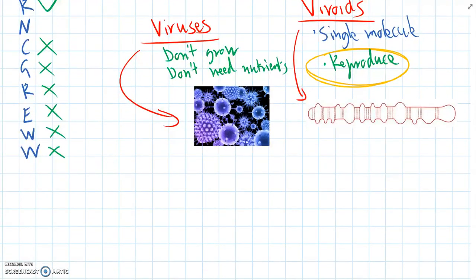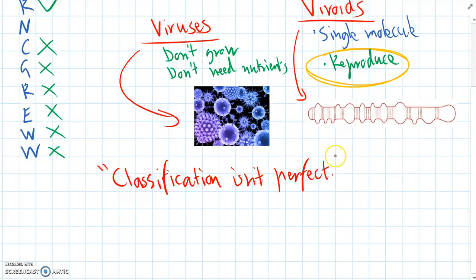Which basically leads on to a couple of important rules to remember when you're learning more biology. And the first one is that classification isn't perfect. We can try and classify things as living or non-living. But you can see with viruses and viroids there's a little bit of a grey area. It's not perfect.